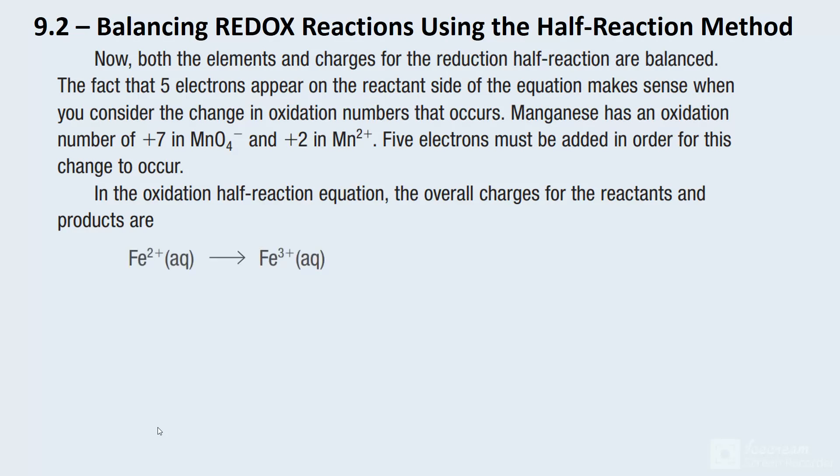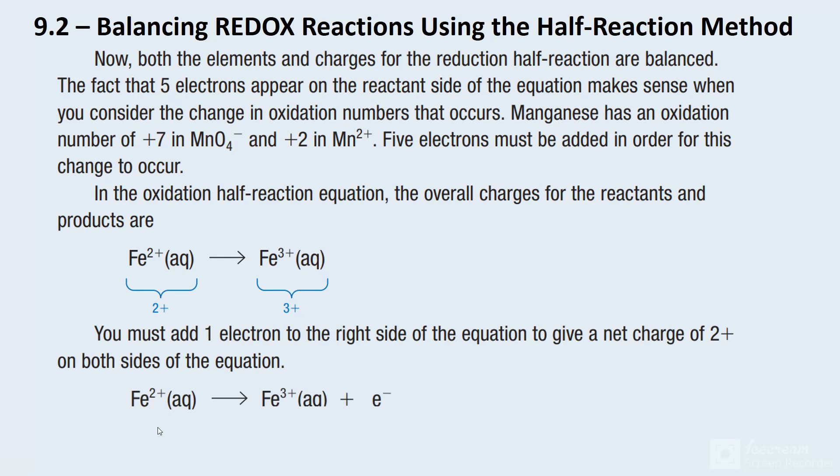With the other one here, all we need to do is add our one electron because we've got a plus two and a plus three. And we're going to add it to that side. And we are now good to go. Plus two, plus two.